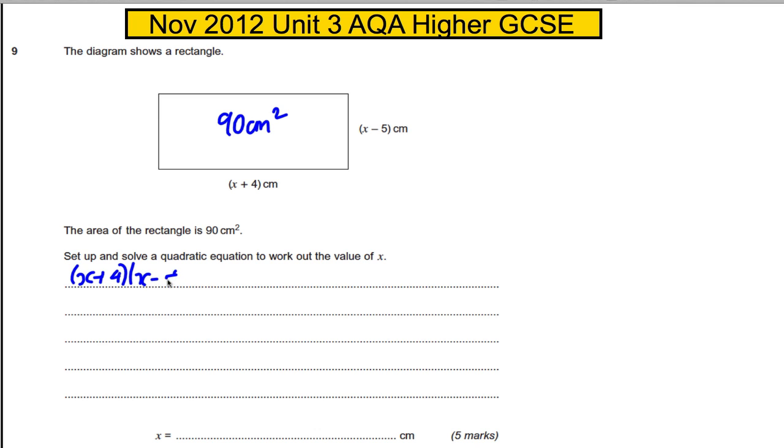Let's expand these brackets. I'll do it over here where there's a bit more space. So x plus 4 multiplied by x subtract 5 must be 90.